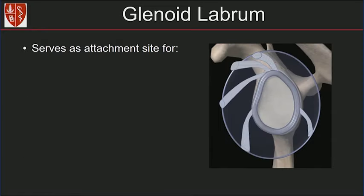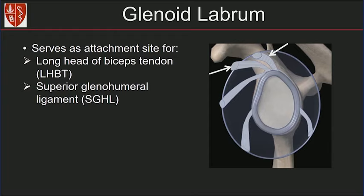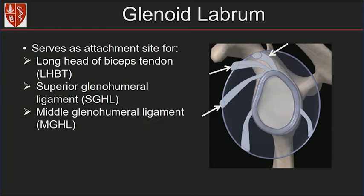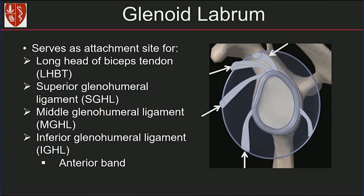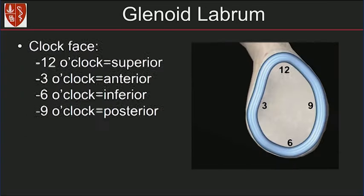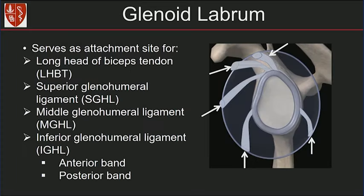The labrum also protects cartilage from compression and shear damage, and serves as an attachment site for the long head biceps tendon, the superior glenohumeral ligament, middle glenohumeral ligament, the inferior glenohumeral ligament anterior band, and posterior band.